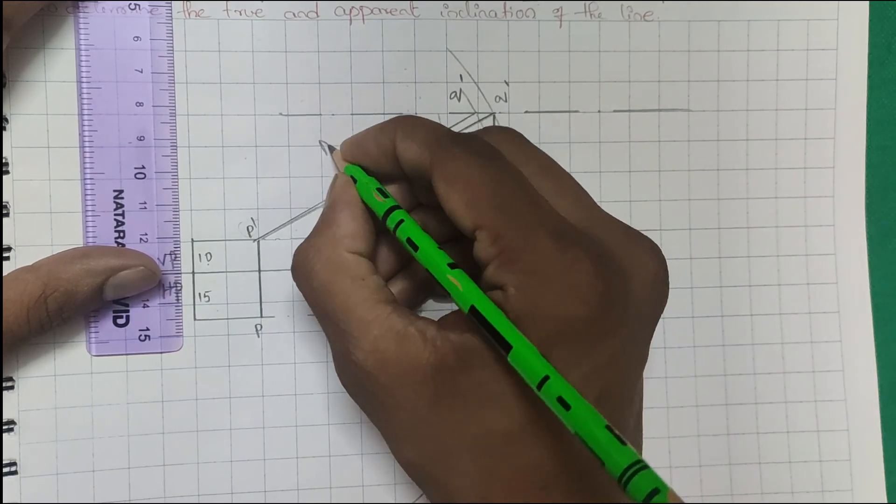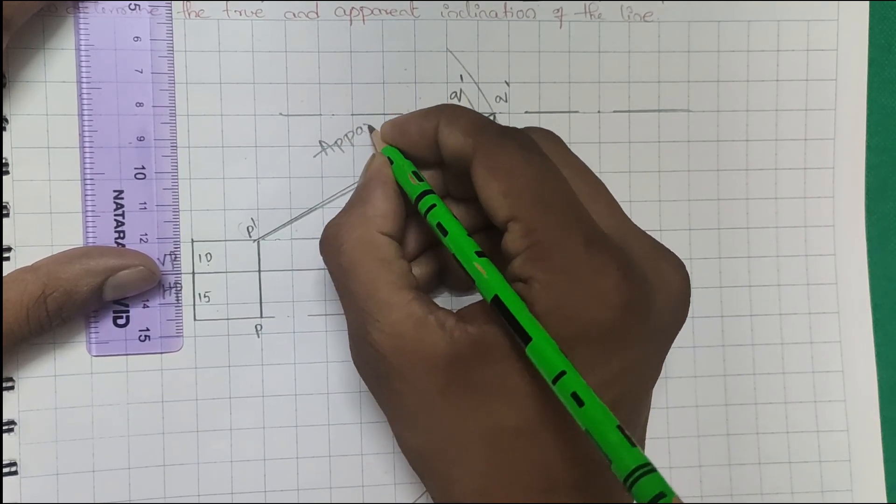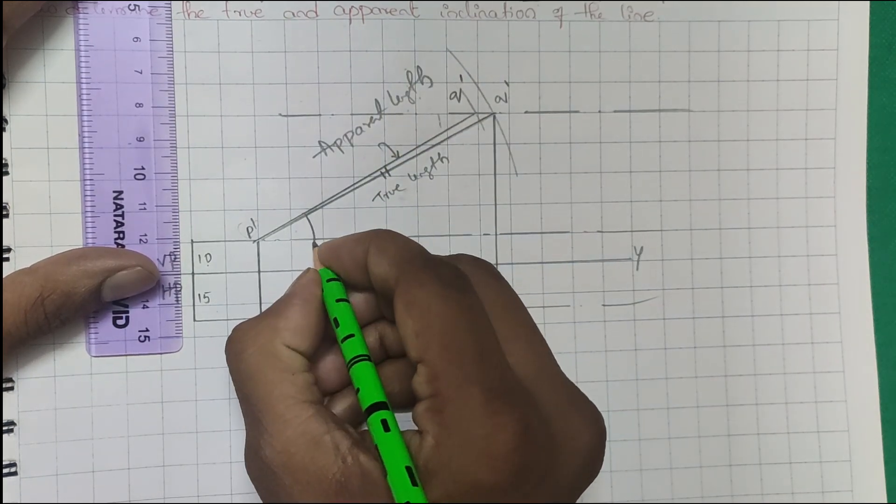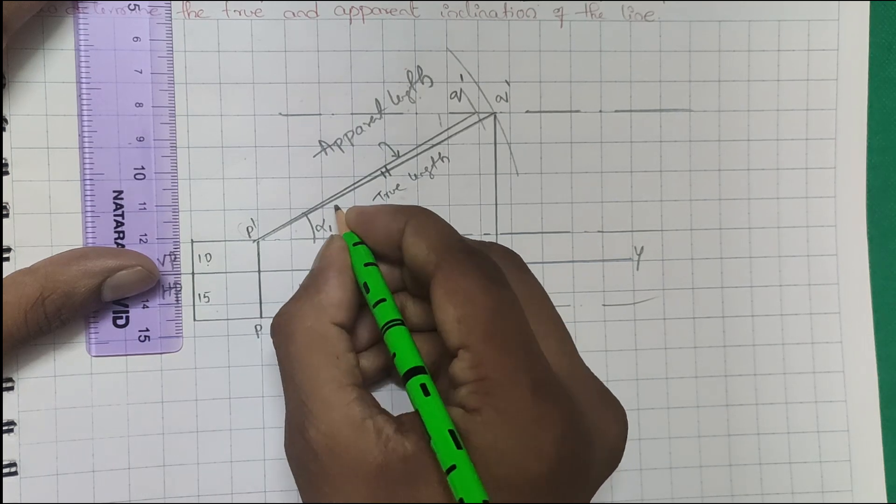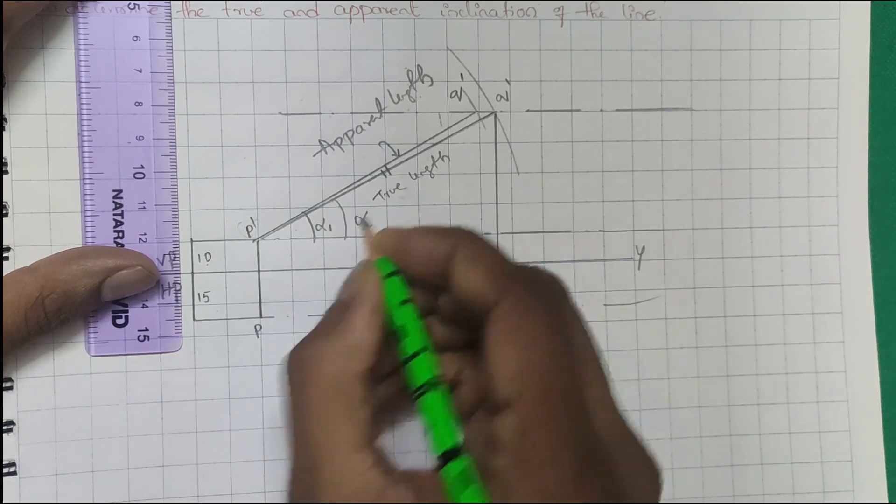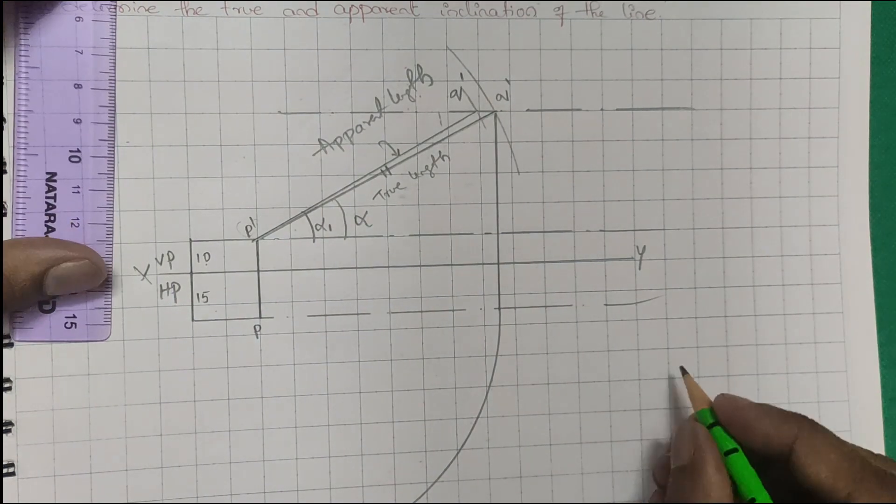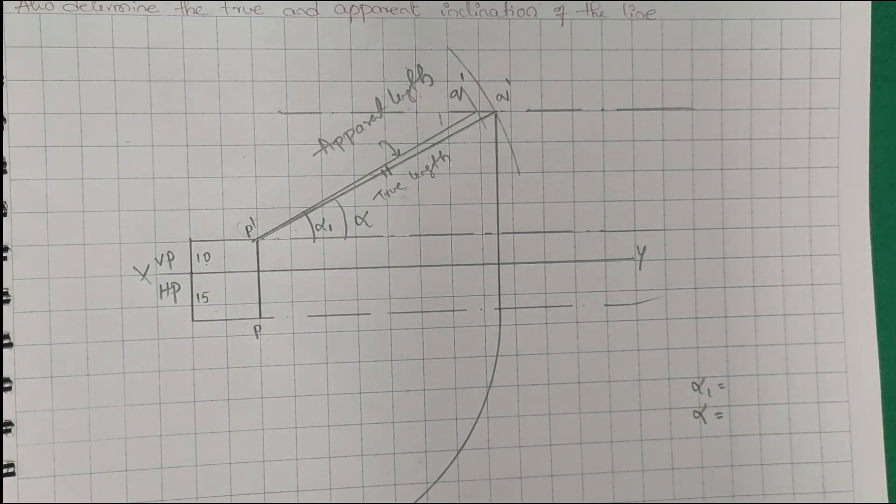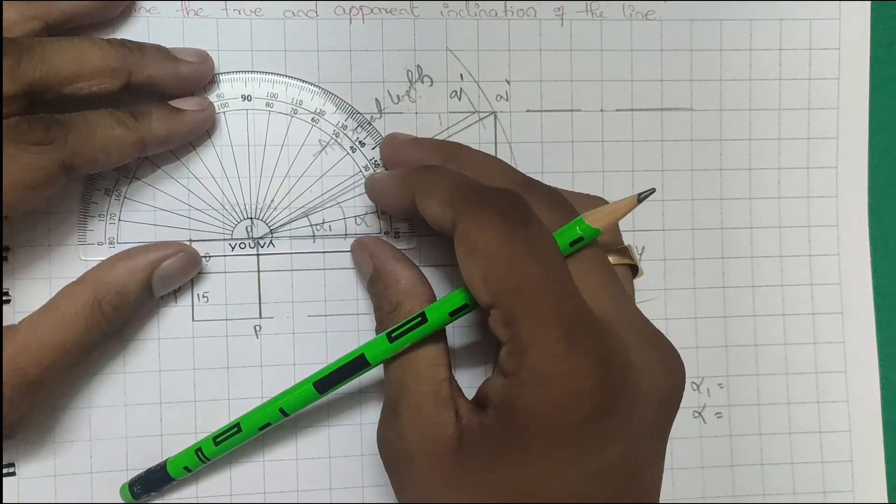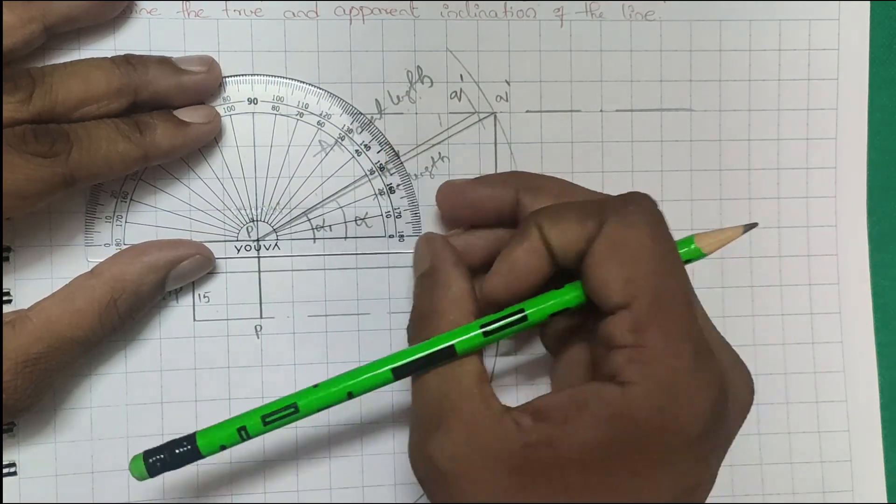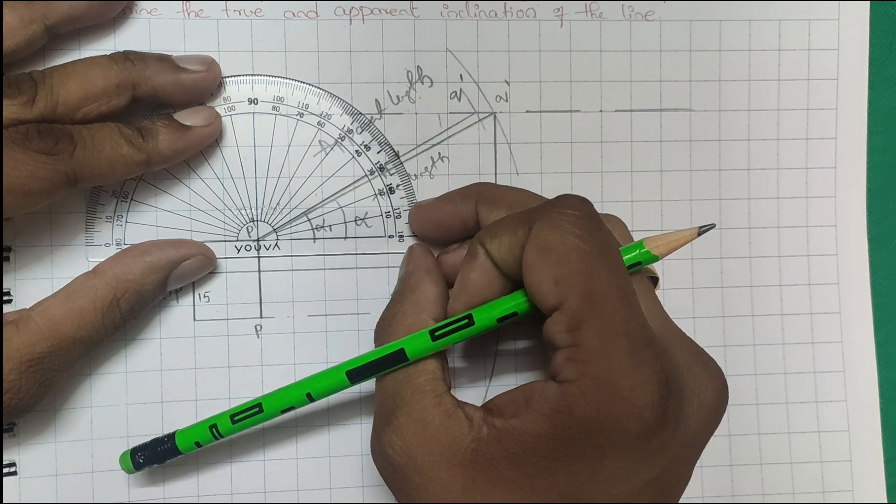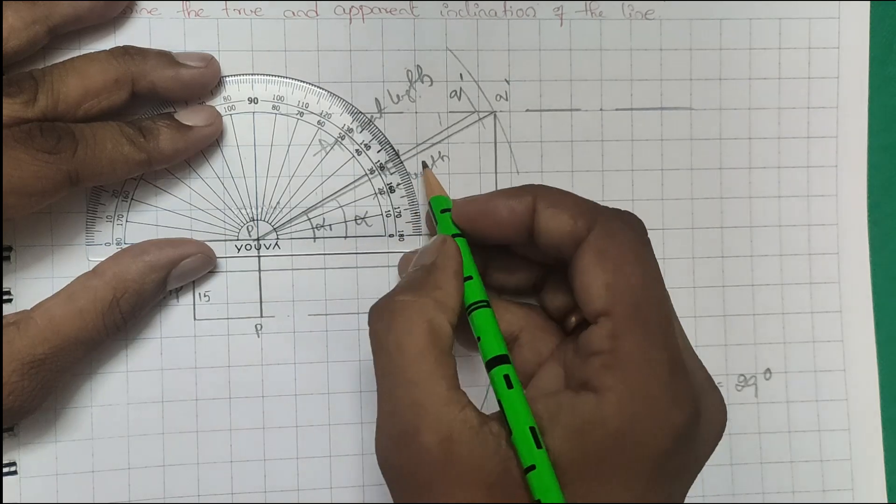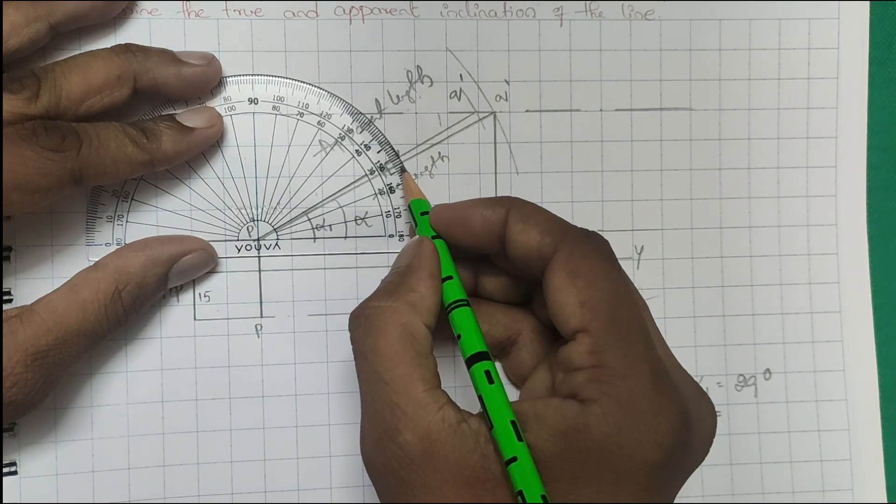You have to find out alpha 1 as apparent length and alpha as true length. Let's see how much you will get. Alpha is around 29 degrees and alpha 1 is around 27 degrees.